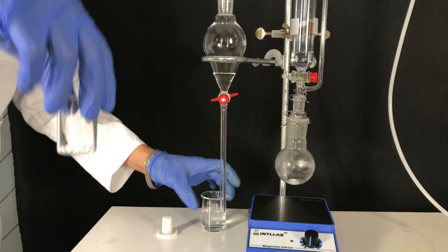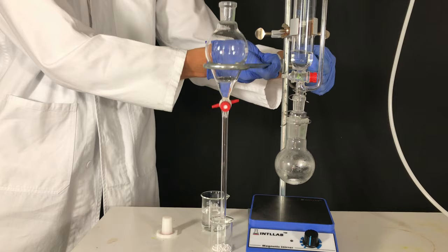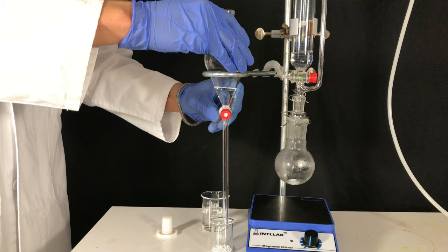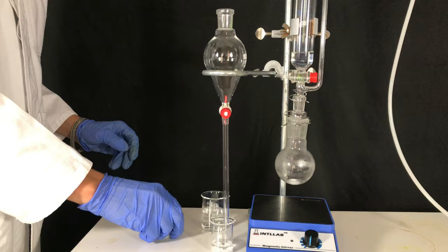The top layer, which is our isopropyl acetate, was transferred to a beaker containing some anhydrous calcium chloride. The anhydrous calcium chloride should absorb all of the water that is still present in the product.